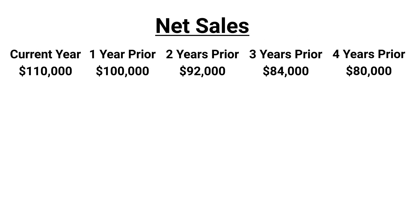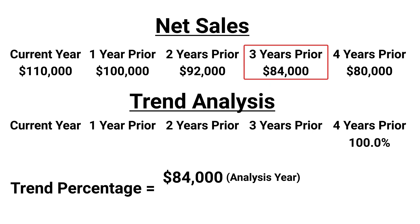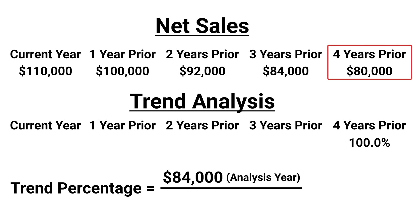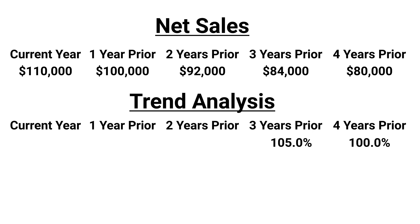Another part of horizontal analysis is trend analysis, which is used to compare data over multiple periods. Continuing our example, assume the company reported the following net sales data for the recent five years. To compute trend percentages for each of these years, we take the analysis period, which in this example is net sales from three years ago of $84,000, and divide that by the base period amount, which in our example is net sales from four years ago of $80,000, to get 1.05 or 105%. We can do the same computation for each of the next three years. Trend analysis is useful because it can help us quickly identify larger or smaller than expected changes, and then we can investigate these changes further.